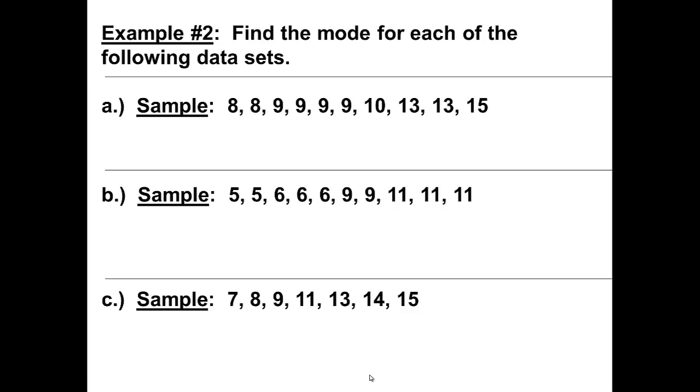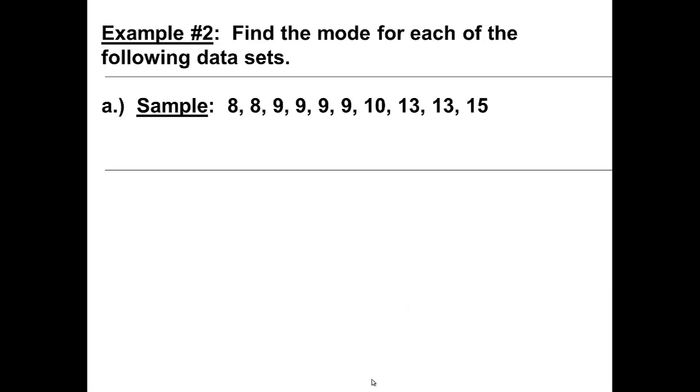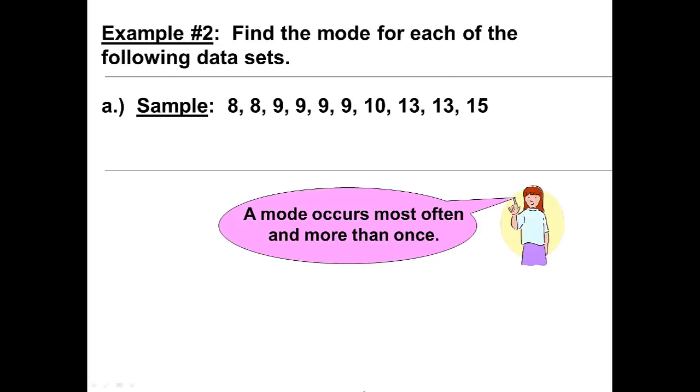Example number two: find the mode for each of the following data sets. Let's look just at part A. The sample has two eights, four nines, a ten, two thirteens, and a fifteen. A mode occurs most often and more than once. There are four nines in our data set.